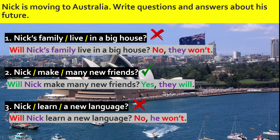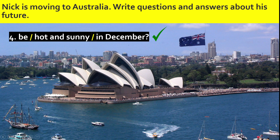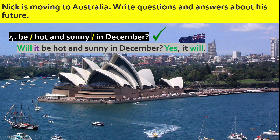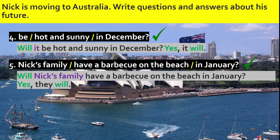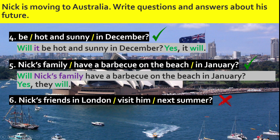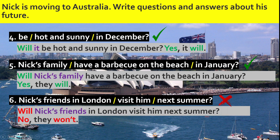Number three: 'Will Nick learn a new language?' — cross — 'No, he won't.' Number four: 'Will it be hot and sunny in December?' — tick — 'Yes, it will.' Number five: 'Will Nick's family have a barbecue on the beach in January?' — tick — 'Yes, they will.' Number six: 'Will Nick's friends in London visit him next summer?' — cross — 'No, they won't.'